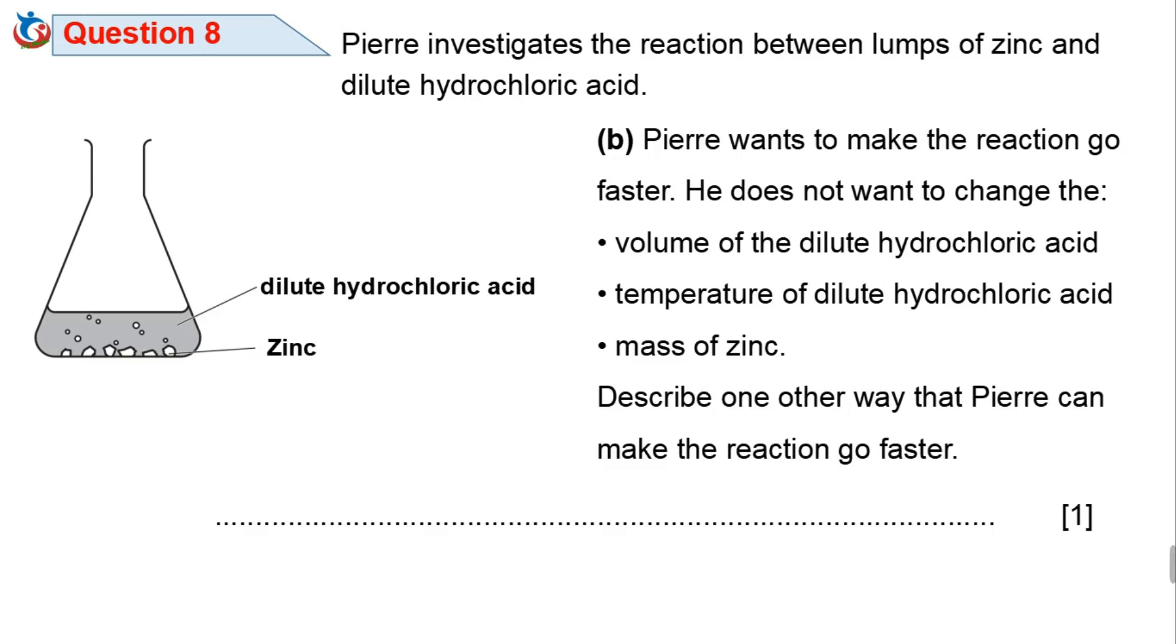The other conditions that can make the reaction go faster without changing the volume, temperature, and mass: one, the use of powdered zinc. The powdered zinc will definitely increase the surface area of the zinc, which will make the reaction go faster.